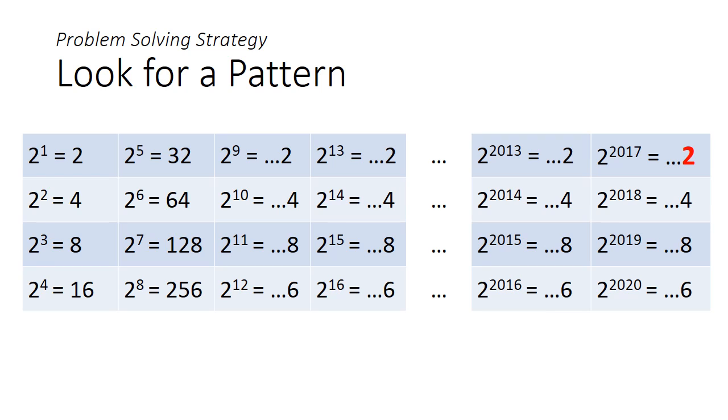So one strategy that we can use here is to look for a pattern. We start by making a list of powers of 2. 2 squared is 4, 2 cubed is 8, 2 to the power of 4 is 16, and by the time you reach 2 to the power of 5, you get 32, which repeats the last digit of 2, as what you began with. But if you aren't sure at this point, you can always generate a few more powers to convince yourself that this pattern is going to repeat ad infinitum.